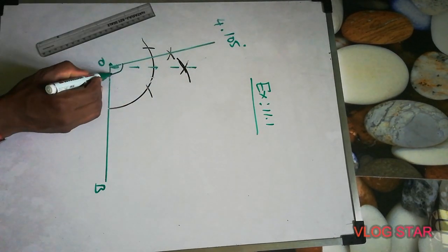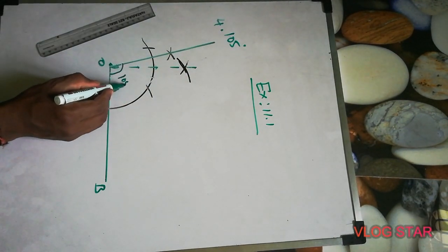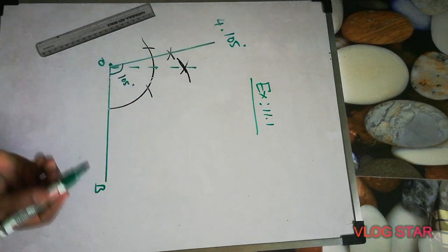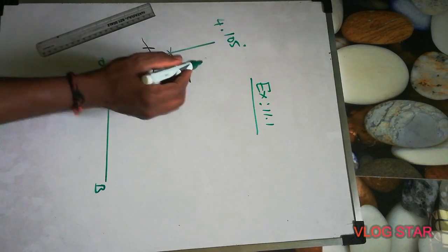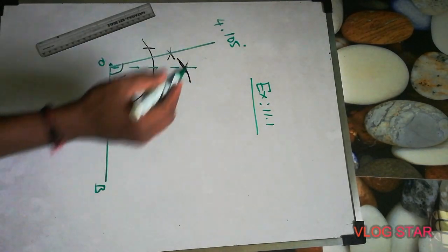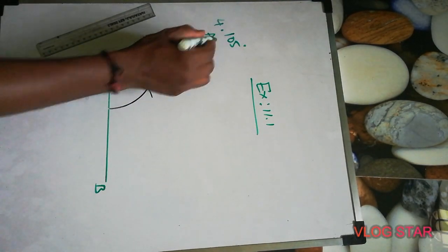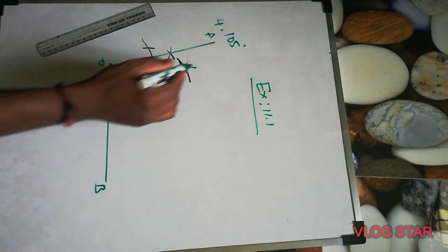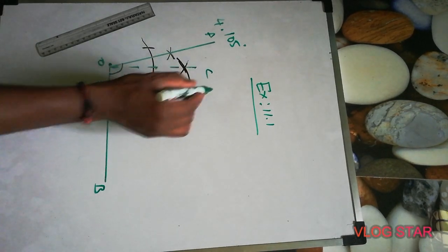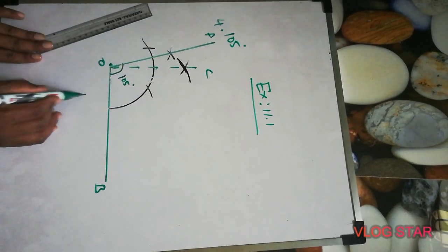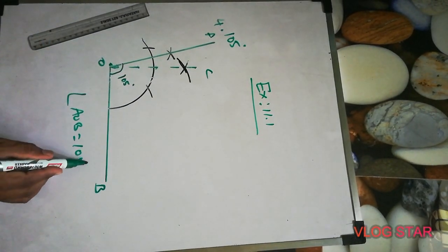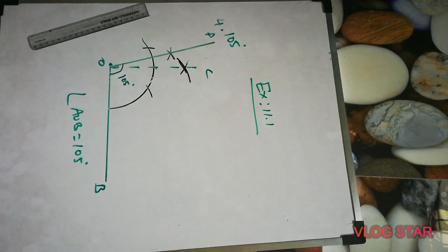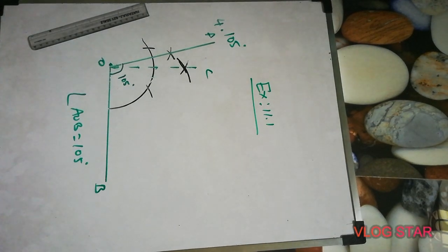So this is 105 degrees. You can label it with points A, O, B and put C. So angle A will be equal to 105 degrees. That is the second one. Now we have to make 135 degrees.